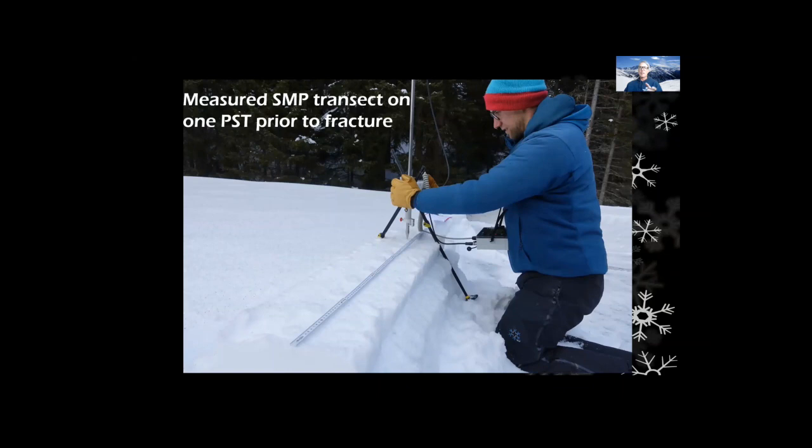In addition, in one PST, we did a snow micropen profile every 10 centimeters along the entire column to quantify the variability that might exist in our sieve slabs. With the sieve slabs, we're trying to make something as homogenous as possible.